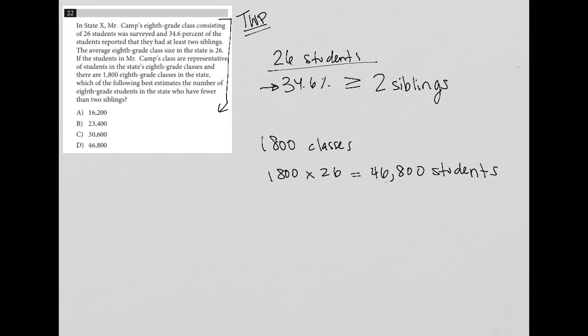So then the students who have fewer than two siblings must be the remaining percentage here to get up to 100% of the class. So if we were to go on our calculators and subtract 34.6 from 100, if I were doing this on the real test, I would not do it in my head just to make sure I don't make any silly errors. So what I get here is 65.4% have to be less than two siblings.